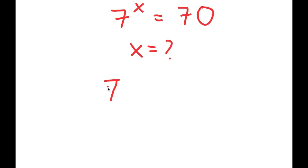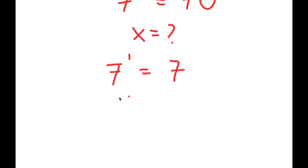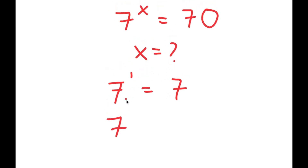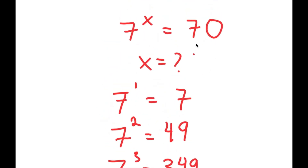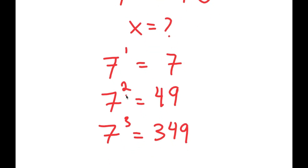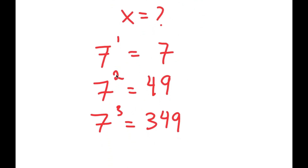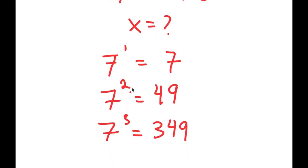Let's just try to plug in a number. Starting with 1: 7 to the power of 1 equals 7. Going higher, 7 to the power of 2 equals 49. And 7 to the power of 3 equals 343. Notice we're trying to find what value of x gives 7 to the power of x equal to 70, but even 3 results in a number much higher than 70, meaning x is going to be a decimal somewhere in between 2 and 3.